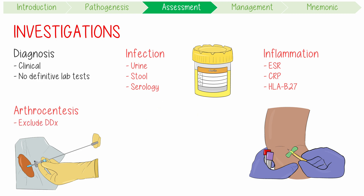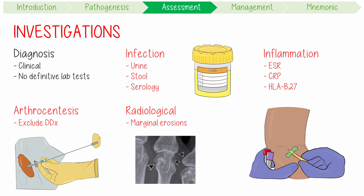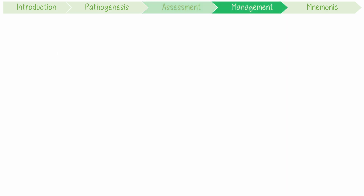Performing arthrocentesis is usually necessary to exclude differentials like septic or crystal-induced arthritis. In the early disease process, radiographic changes may be absent. But long-term, marginal erosions and loss of joint space can be seen in affected joints, much like psoriatic arthritis.